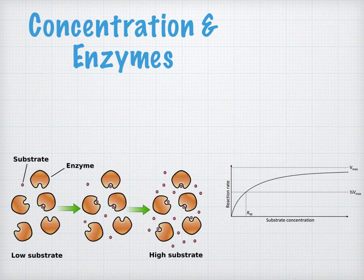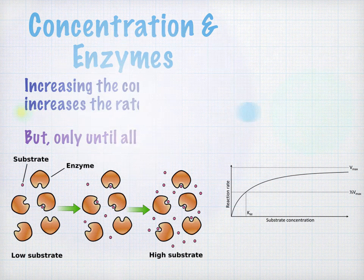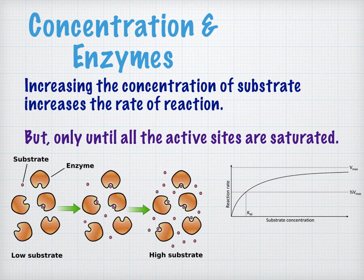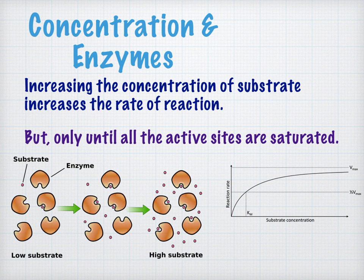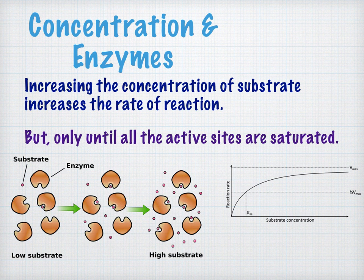One final factor that affects the rate of enzyme-controlled reactions is the concentration of substrate. Generally, as you increase the concentration of the substrate, it increases the rate of reaction. This comes down to collision theory — if you have more molecules of substrate, there are going to be more collisions between an active site and a substrate molecule per second. However, this only works up to a certain point. When there is too much substrate, the active sites become saturated and are all filled, so the rate of reaction doesn't increase any further.